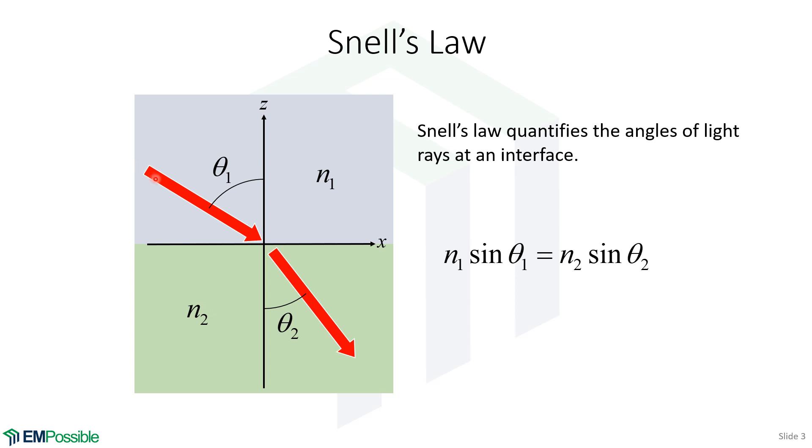If we have a wave coming in at angle theta 1 relative to the surface normal, the wave in medium 2 will have a different angle, theta 2. The relation between these four parameters is described by Snell's law. At an interface, waves can change their direction.